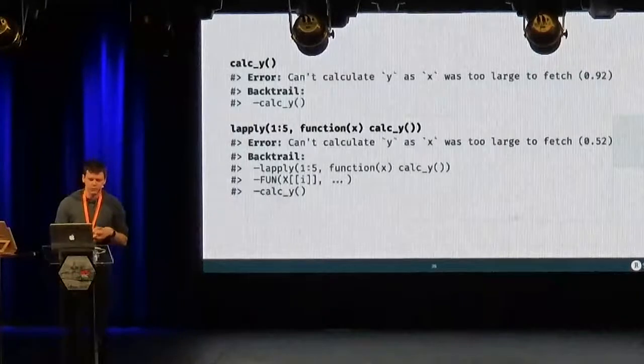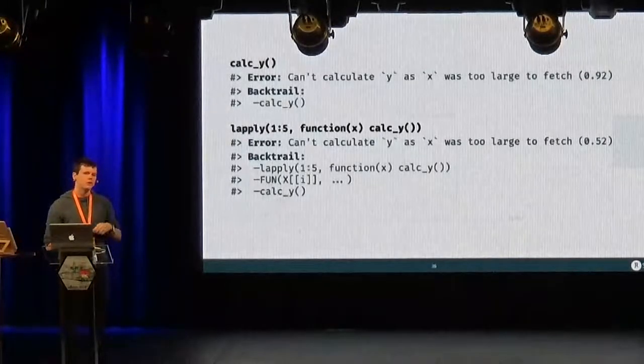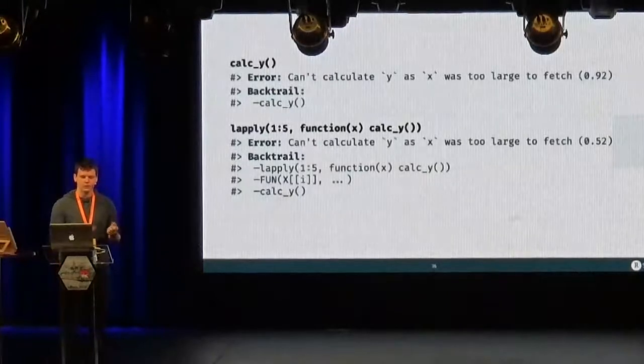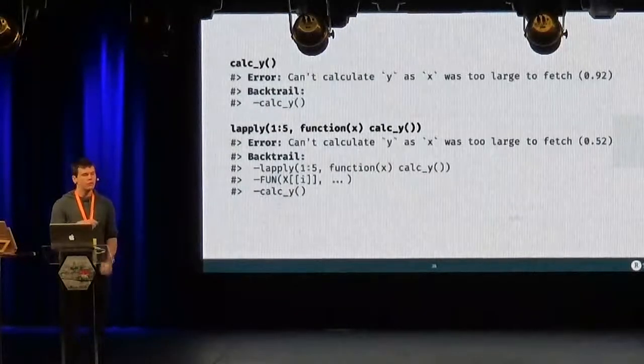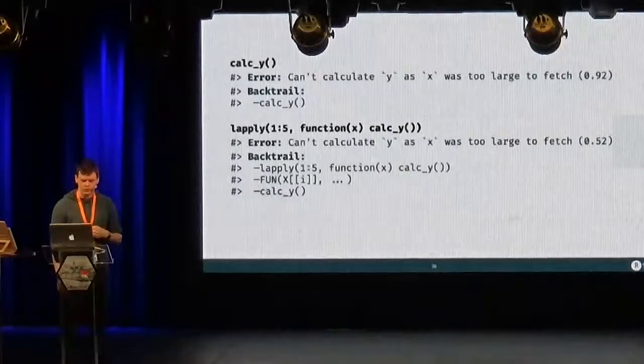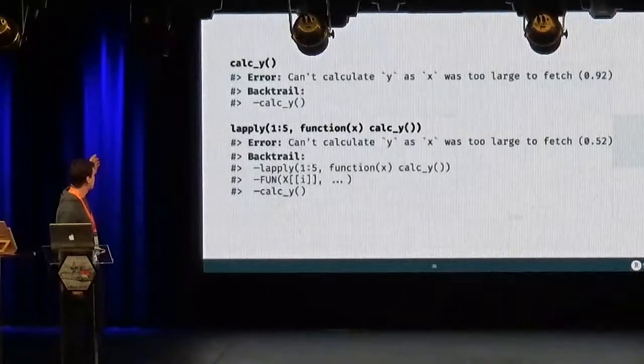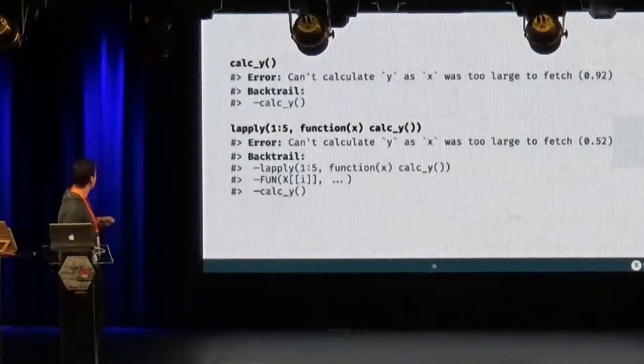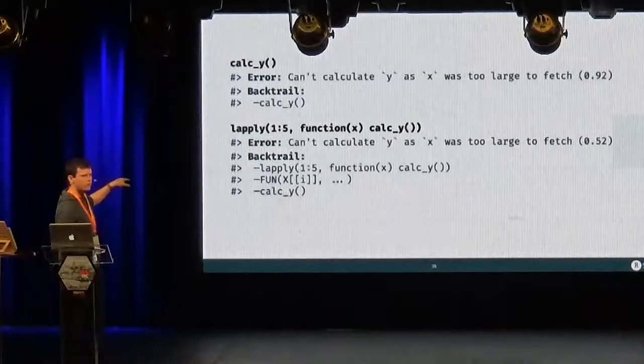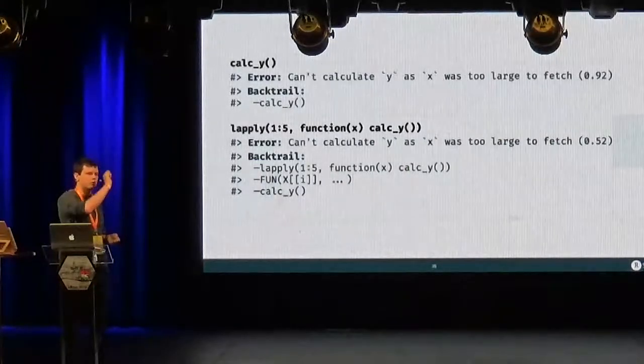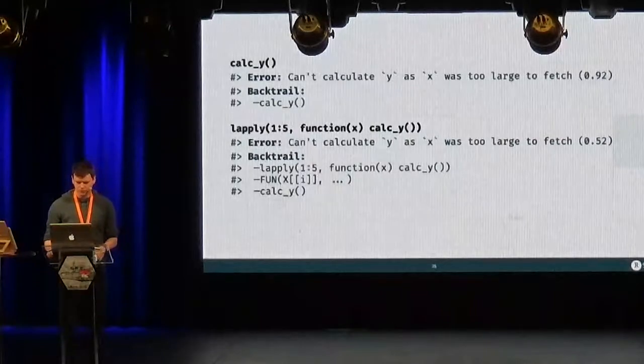And so we are going to include them by default in error messages. So instead of seeing error can't calculate Y, you will also see the backtrace that led to this error. So here we have a very simple backtrace because there's only one call. But if, for example, you call the function from lapply, then you see in the backtrace that you make your way from the function to the lapply call.